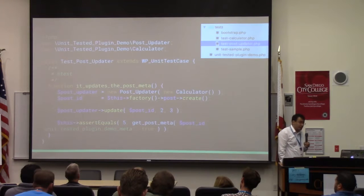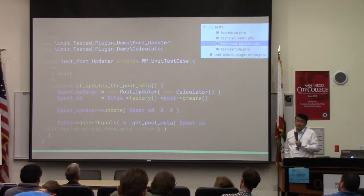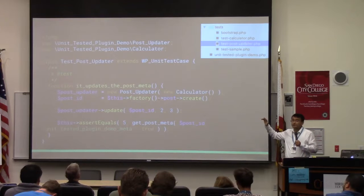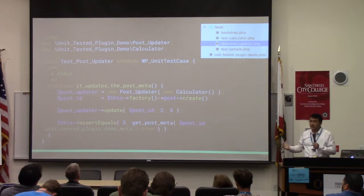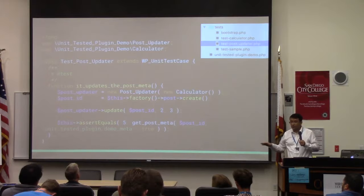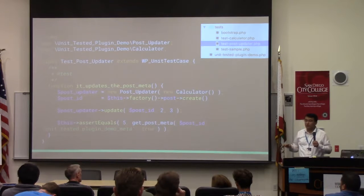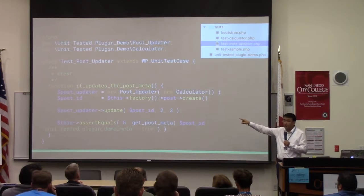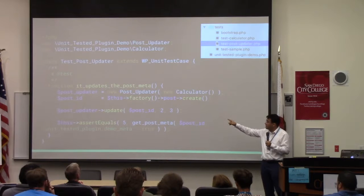This factory is one of the benefits of using WP unit test case. WP unit test case provides you with factory utilities so you can easily generate a new post on the fly and use it inside your test. Once your test suite runs, the WordPress test suite automatically destroys everything that was created inside the test database, so it will not be permanent. The factory creates a post and returns its ID, and now you can run the post-updater's update method with that post ID and some numbers.